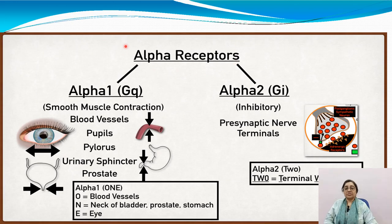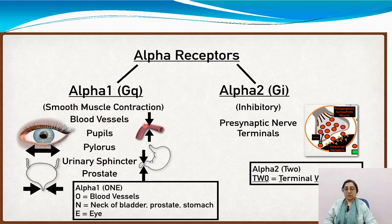Alpha adrenergic receptors are alpha-1 and alpha-2. Alpha-1 receptors are stimulatory, causing muscle contraction, while alpha-2 receptors are inhibitory. Alpha-1 receptor locations include blood vessels, pupils, pylorus, urinary bladder, and prostate — all smooth muscles are contracted. In blood vessels, vasoconstriction occurs; in the pupil, dilation occurs due to alpha-1 receptors on the radial muscle.